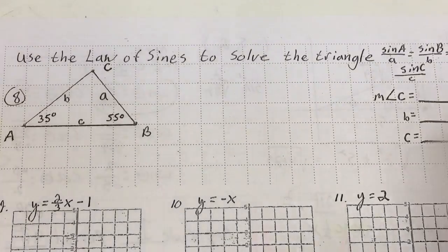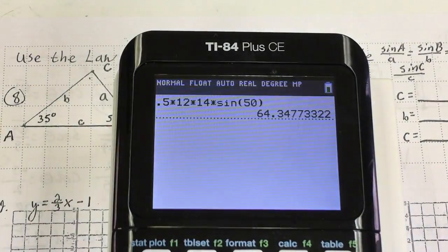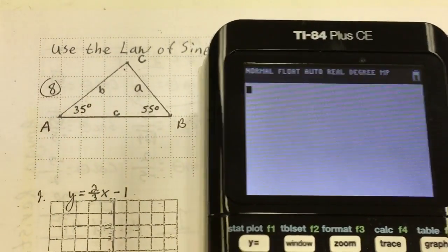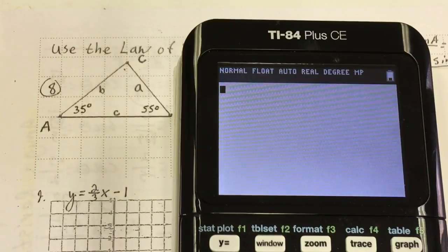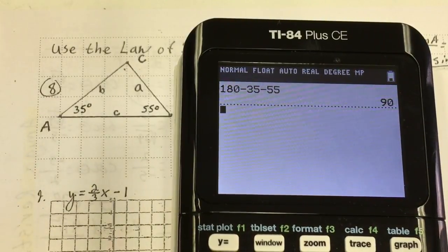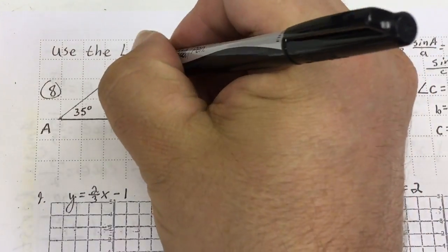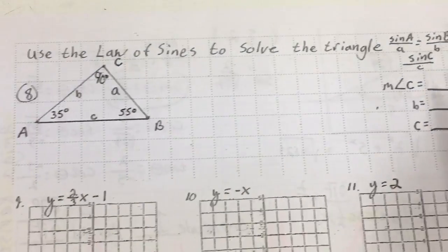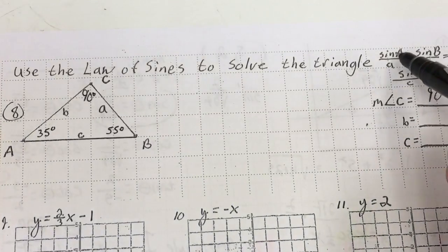Law of sines is pretty difficult. First thing I want to do is find the upper angle. I do that by geometry: 180 minus 35 minus 55 gives me 90 degrees. So the angle up top is 90 degrees, and angle C over here is 90 degrees. Now I'm going to do my law of sines: sine of angle A over side a equals sine of B over side b.